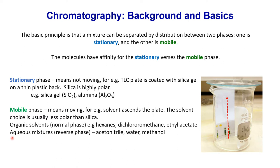In the organic lab, we use hexane, dichloromethane, or ethyl acetate as normal phase organic solvents — we call these the mobile phase. Sometimes we use aqueous mixtures such as acetonitrile, water, or methanol if we have very polar molecules. For the stationary phase, we use silica gel or silica dioxide, which is highly polar — it must be more polar than the organic solvent. If we don't have silica gel, sometimes we use alumina, which is also very polar, but we mainly use silica gel in the organic lab.